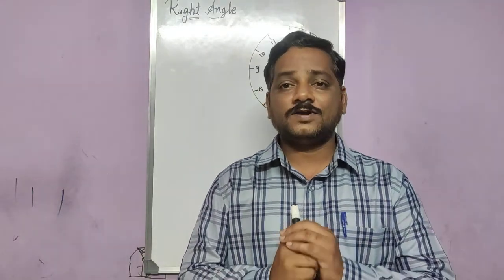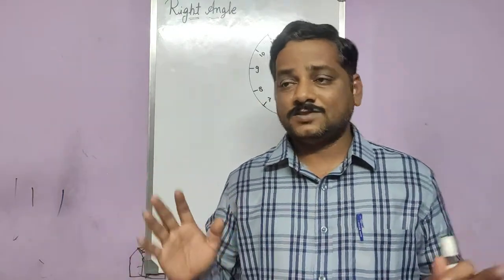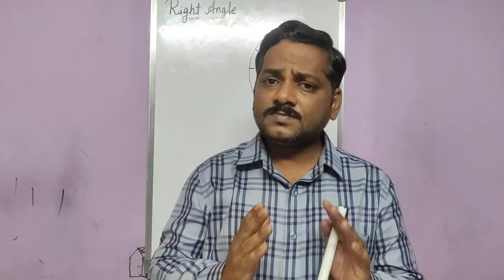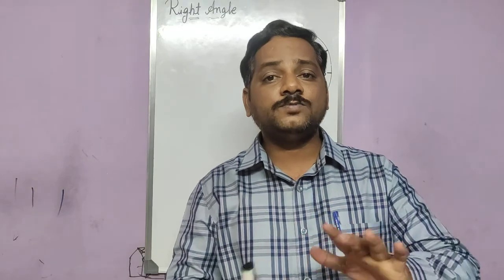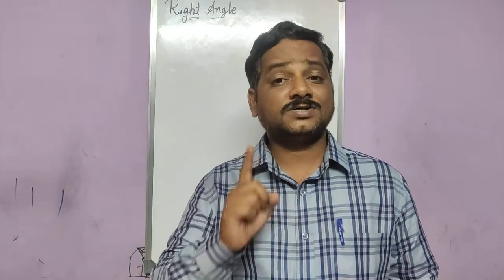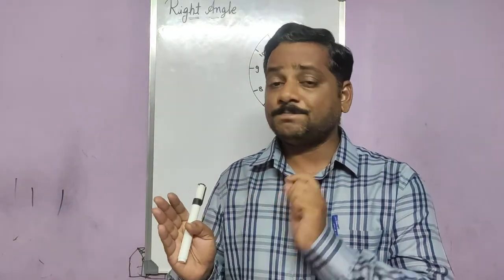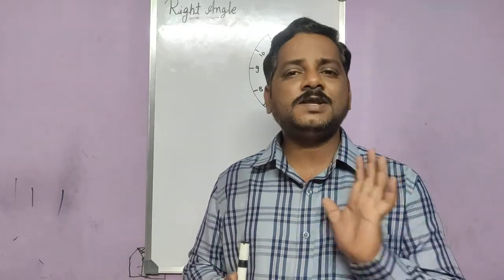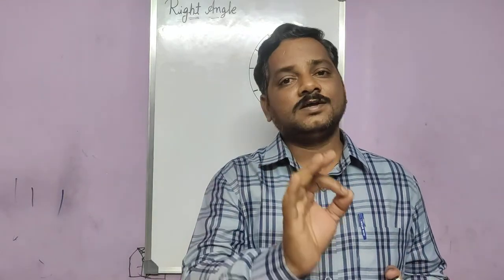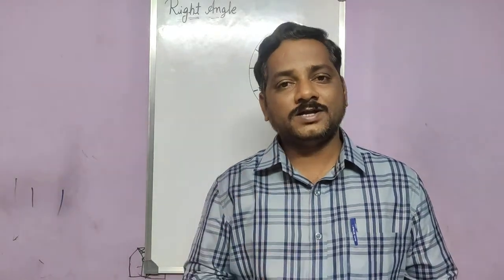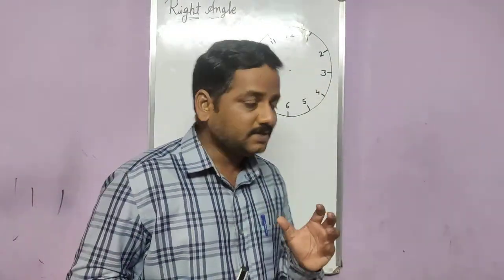Now let's move on to today's session. In this class we are going to study about the right angle — that is, in a clock, the hour and minute hands are going to be exactly displaced by an angle of 90 degrees. You need to find at what time they are displaced by 90 degrees. An important note from lecture one: the minute hand gains 55 spaces in 60 minutes. That statement is very important and was explained clearly in lectures one and two.